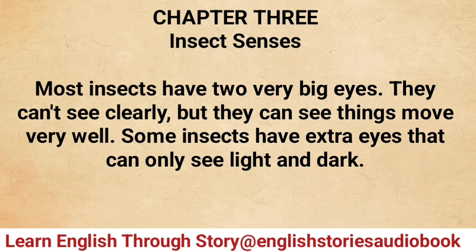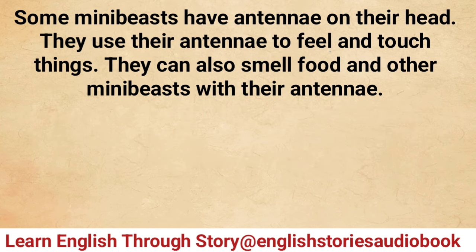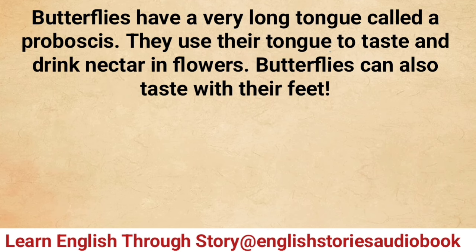Chapter three: Insect senses. Most insects have two very big eyes. They can't see clearly but they can see things move very well. Some insects have extra eyes that can only see light and dark. Some mini beasts have antennae on their head — they use their antennae to feel and touch things and also smell food and other mini beasts.